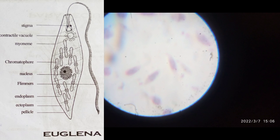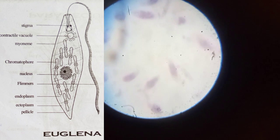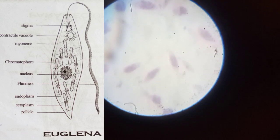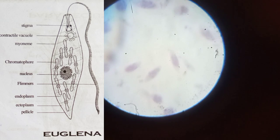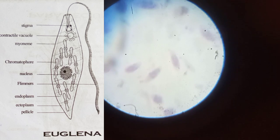The anterior part is blunt. It has a cytostome, cytopharynx, and reservoir at the anterior part. It also has whip-like flagella and a stigma.